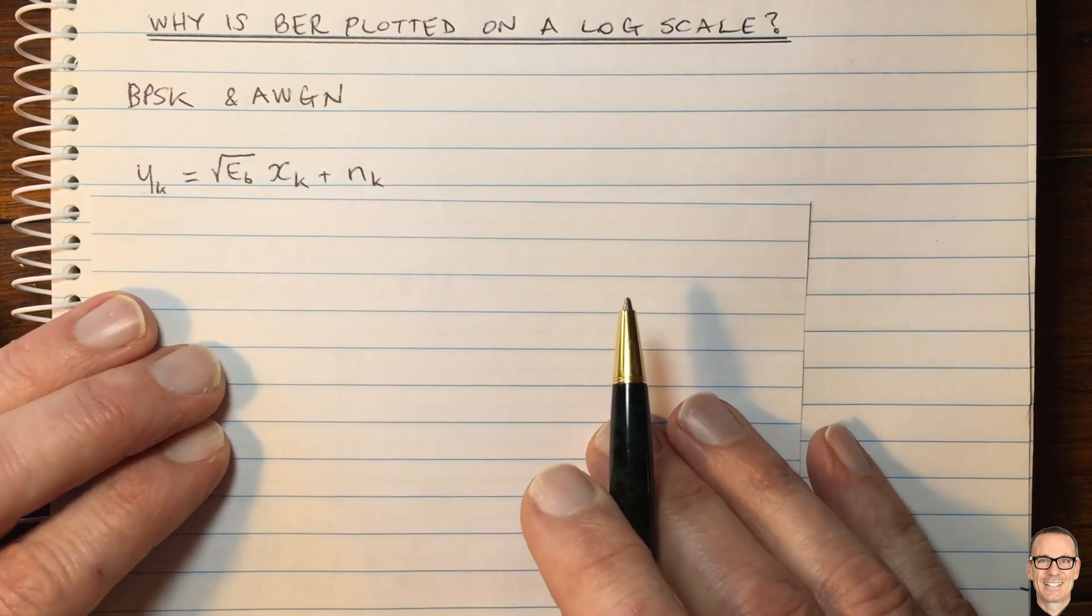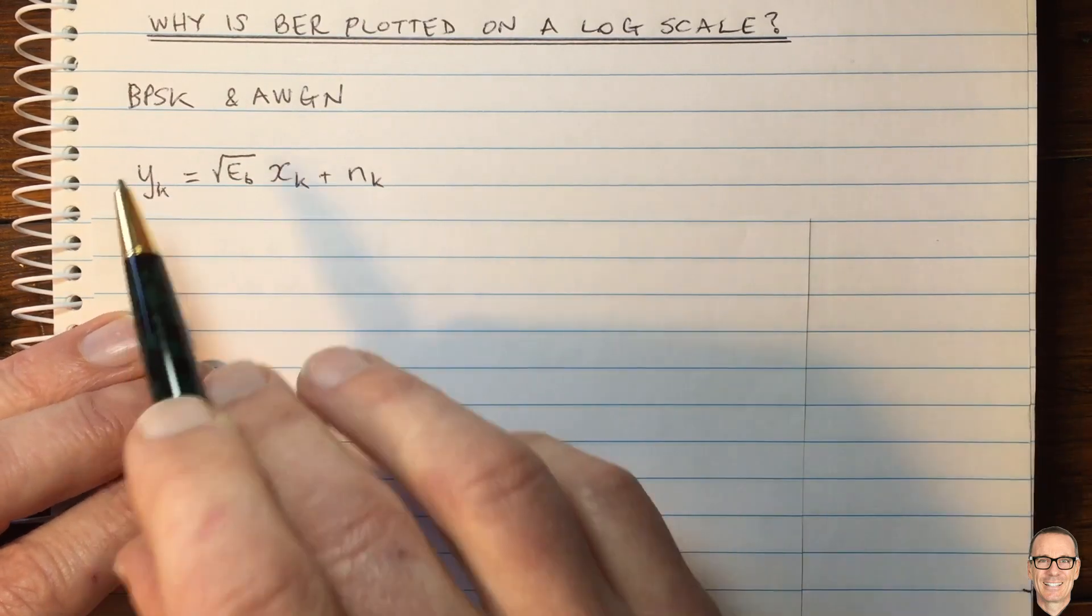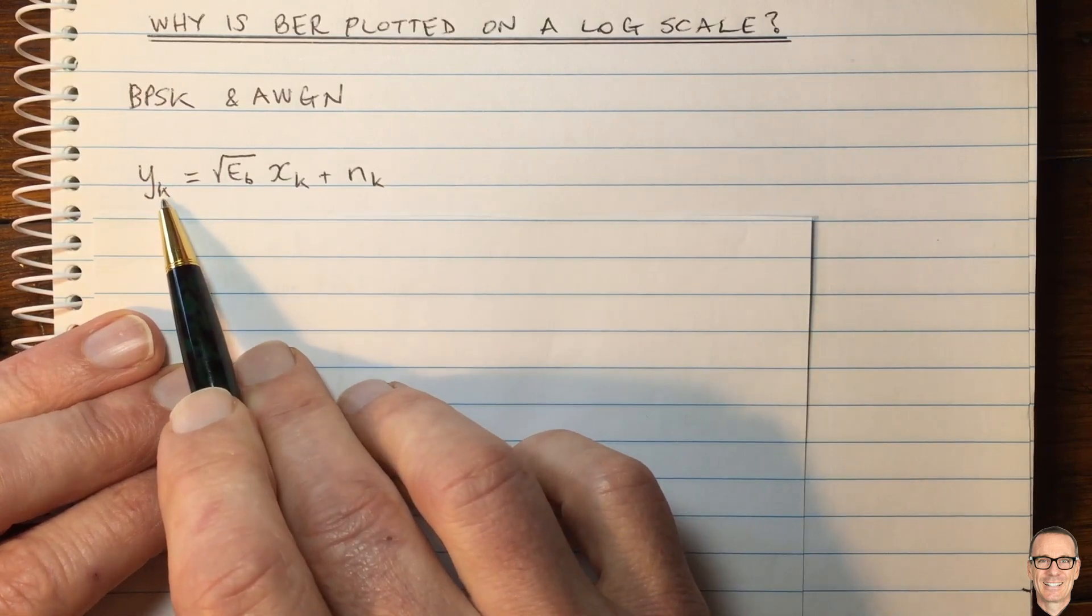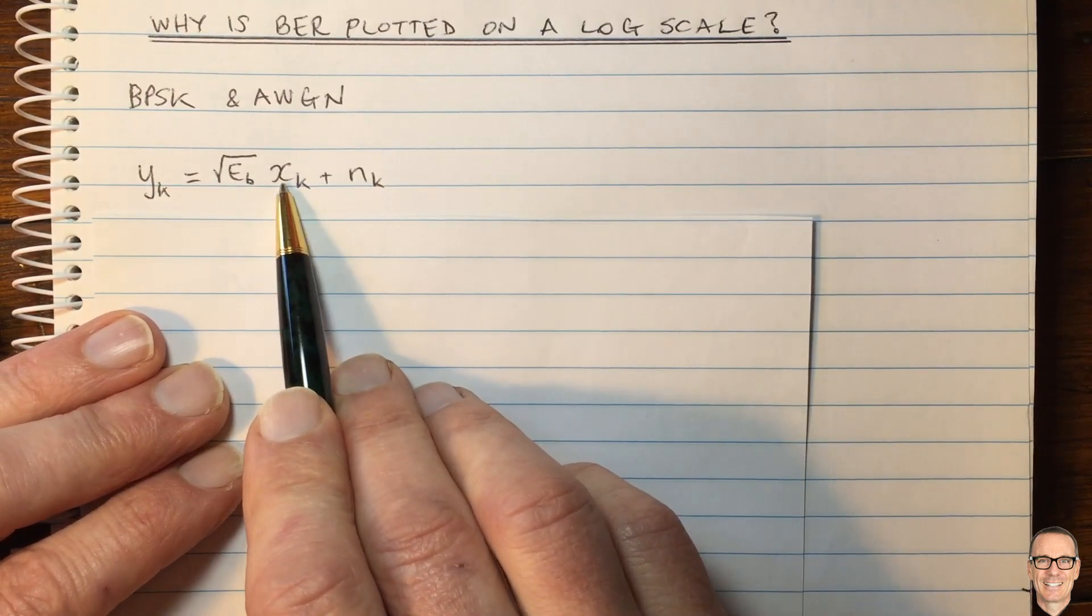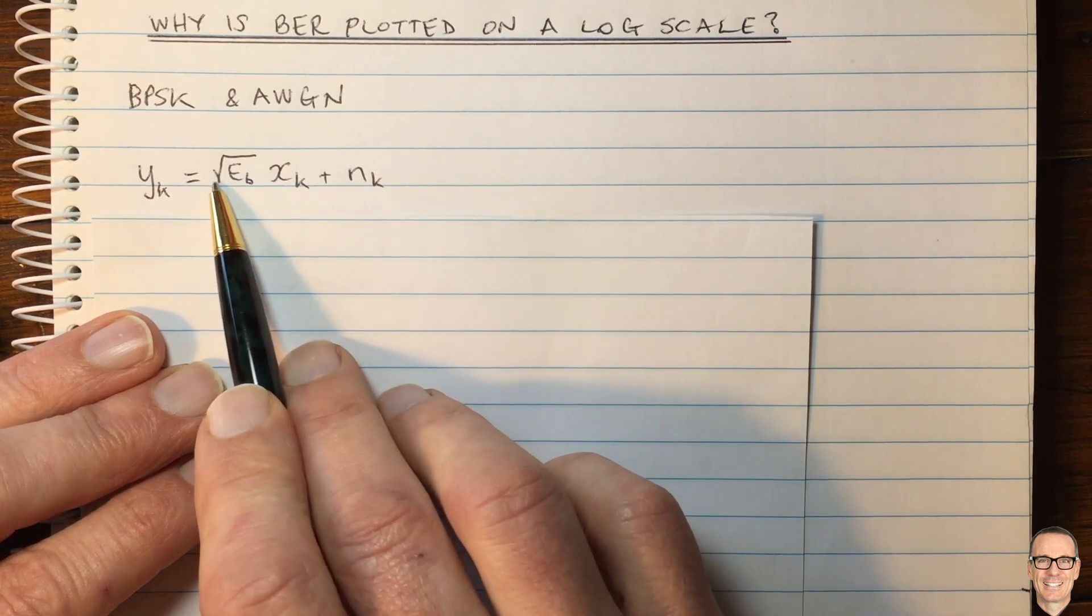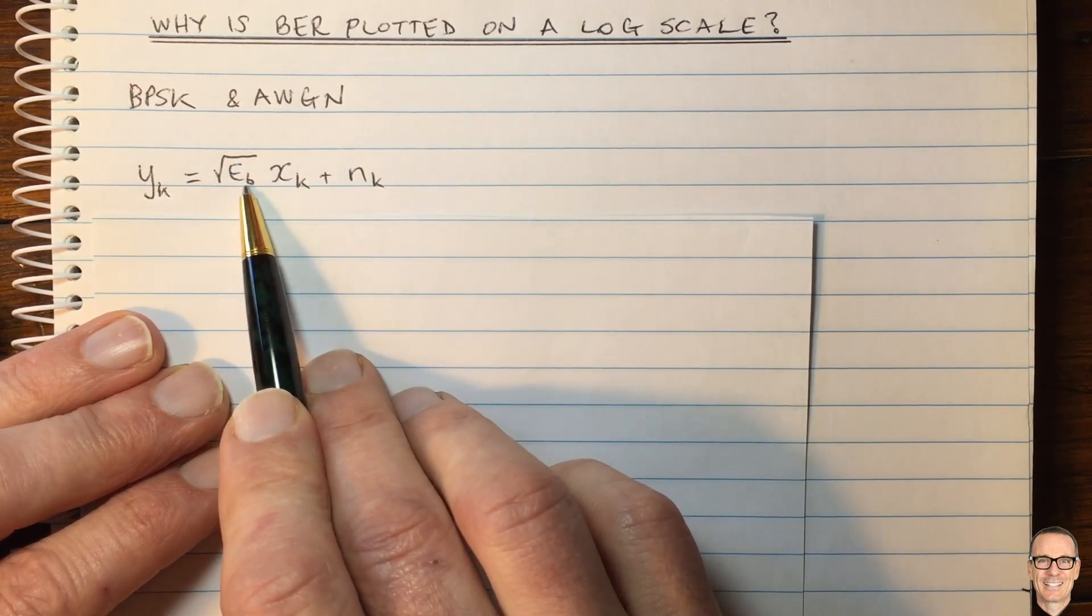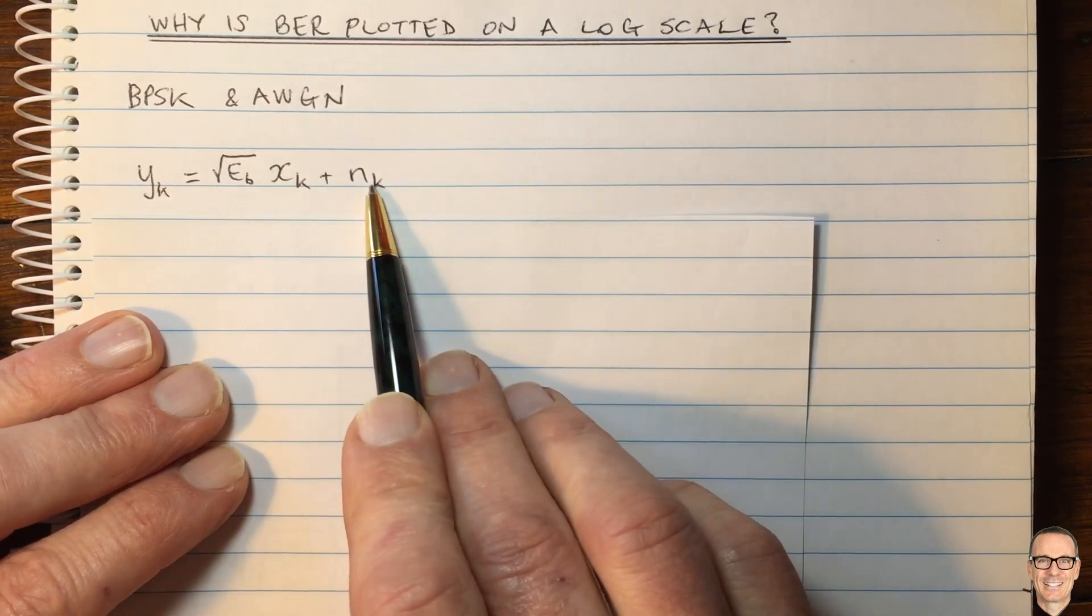In this case, the received signal can be written like this, where at time k, the signal is the input data signal of plus and minus ones multiplied by the square root of the energy per bit plus Gaussian noise.